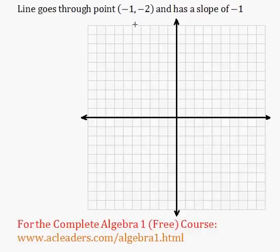Find the equation of the linear function in slope-intercept form, given the following information. We know that the line goes through the point (-1, -2) and has a slope of -1.